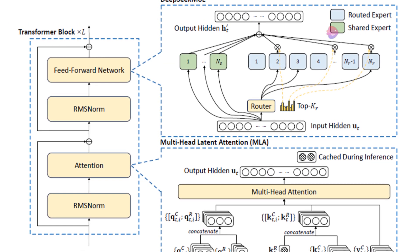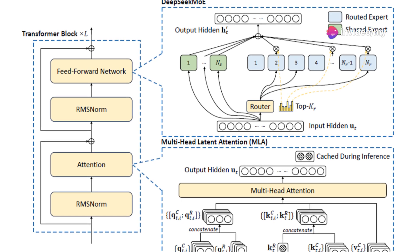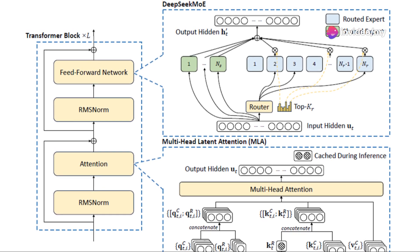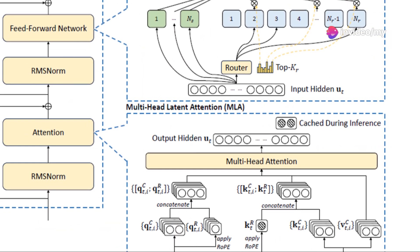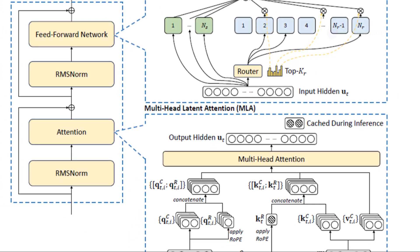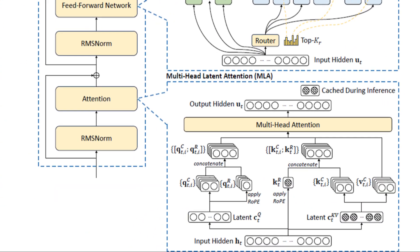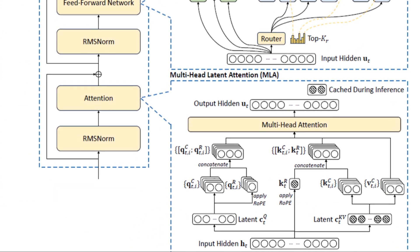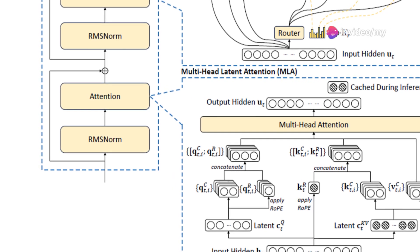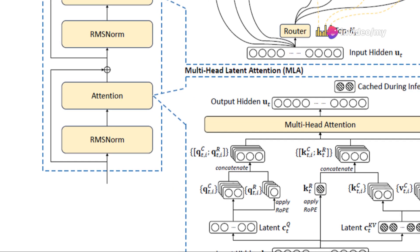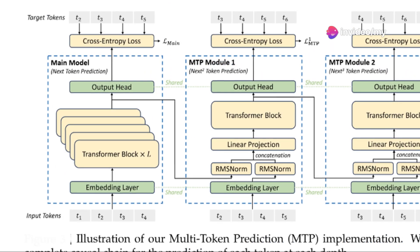Data flows through transformer blocks, which process and analyze aspects of the input sequence. This output then moves to the DeepSeek MoE block, home to the model's multiple experts. A dynamic routing mechanism intelligently routes the input to the most relevant experts, significantly reducing computational overhead.